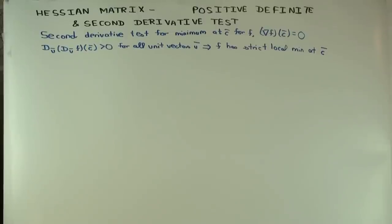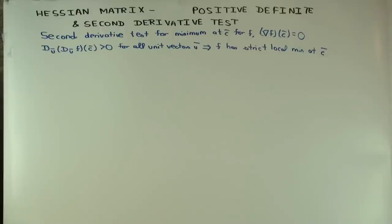In this talk, I'm going to consider an application of the Hessian matrix to constructing a second derivative test for functions of multiple variables. We're just going to do one case, which is the case of the minimum. The others are pretty similar, but the minimum is a little easier to explain, so I'll just do that.